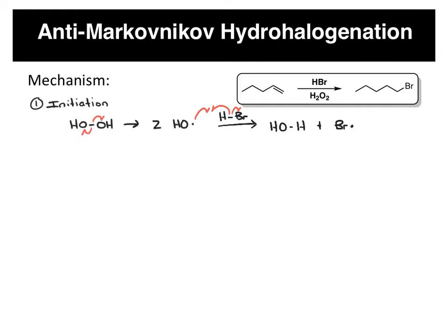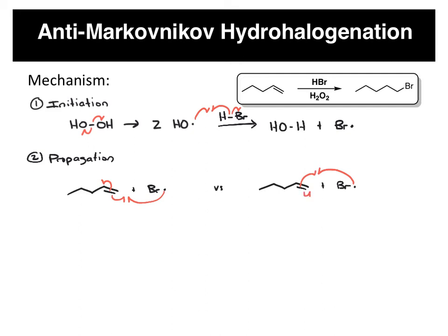The next part of this mechanism is the propagation, and this is where we get the anti-Markovnikov selectivity. Here's your alkene, and we have a bromine radical that can react with the double bond and do a radical addition. We have two options: the bromine can go to the less substituted carbon, leaving a radical on the more substituted carbon, or the bromine can go to the more substituted carbon, leaving a radical on the less substituted carbon. Let's draw both possibilities.